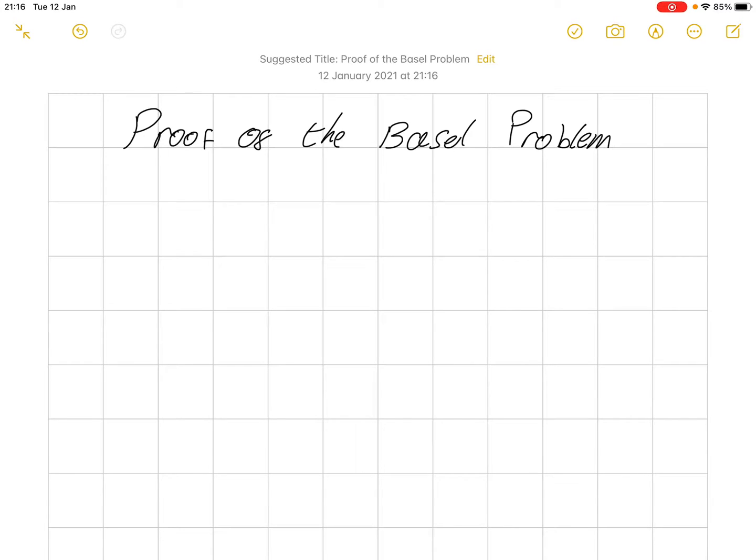Hello everybody, welcome back to the channel. In this video we will explore a proof of the Basel problem. Now for those of you who are unfamiliar with the Basel problem, it was proved by Euler in about 1730. And it states that the sum from n equals 1 to infinity of 1 over n squared is equal to pi squared divided by 6.